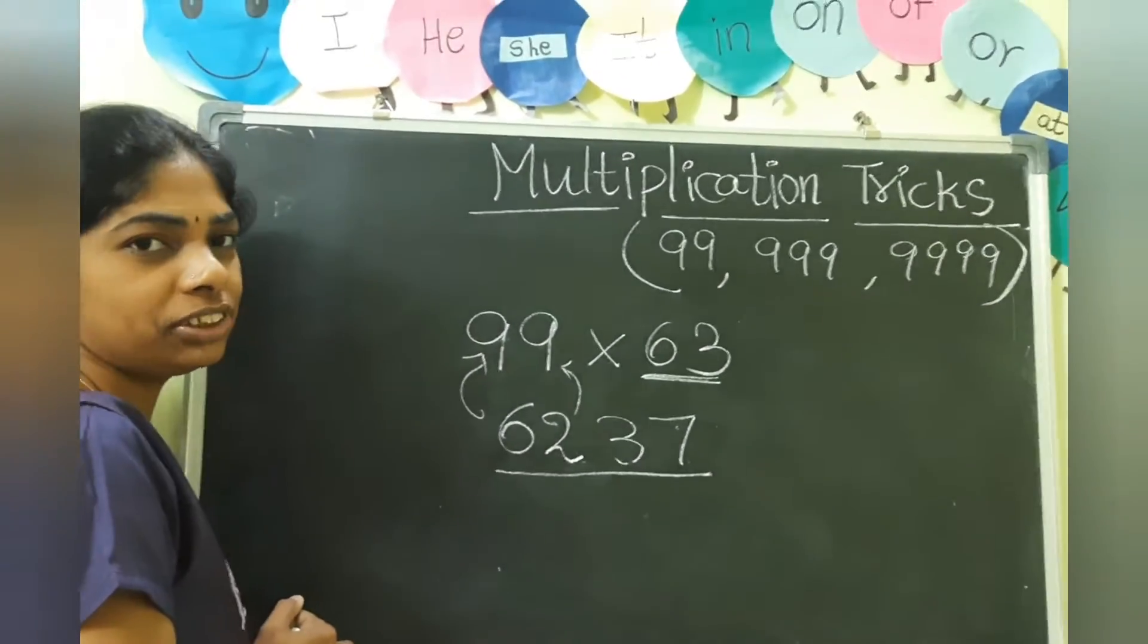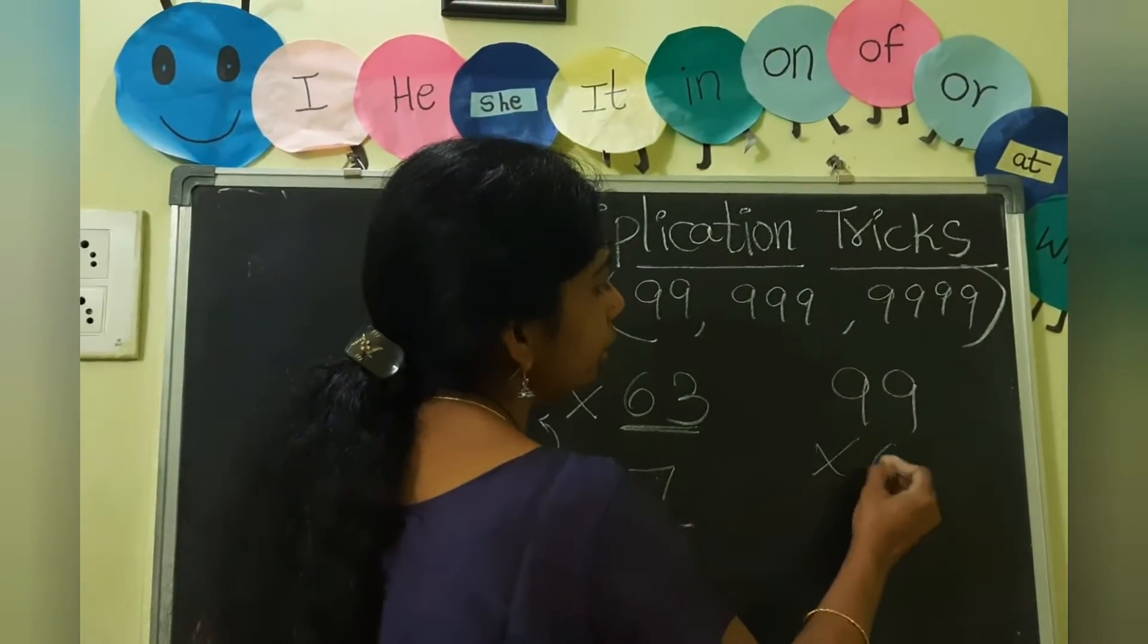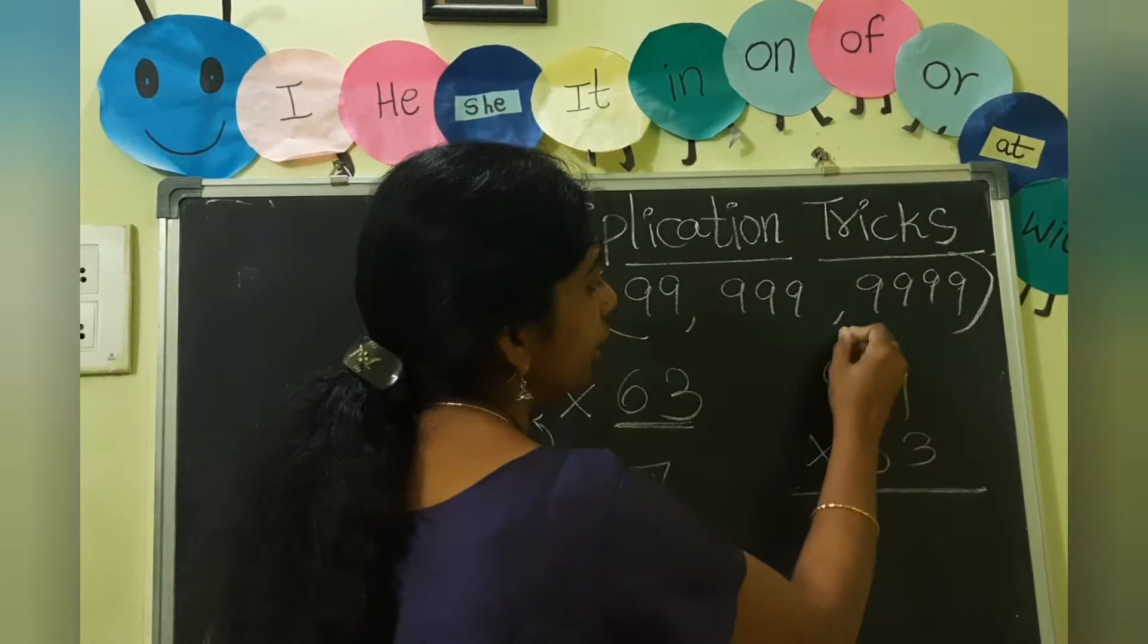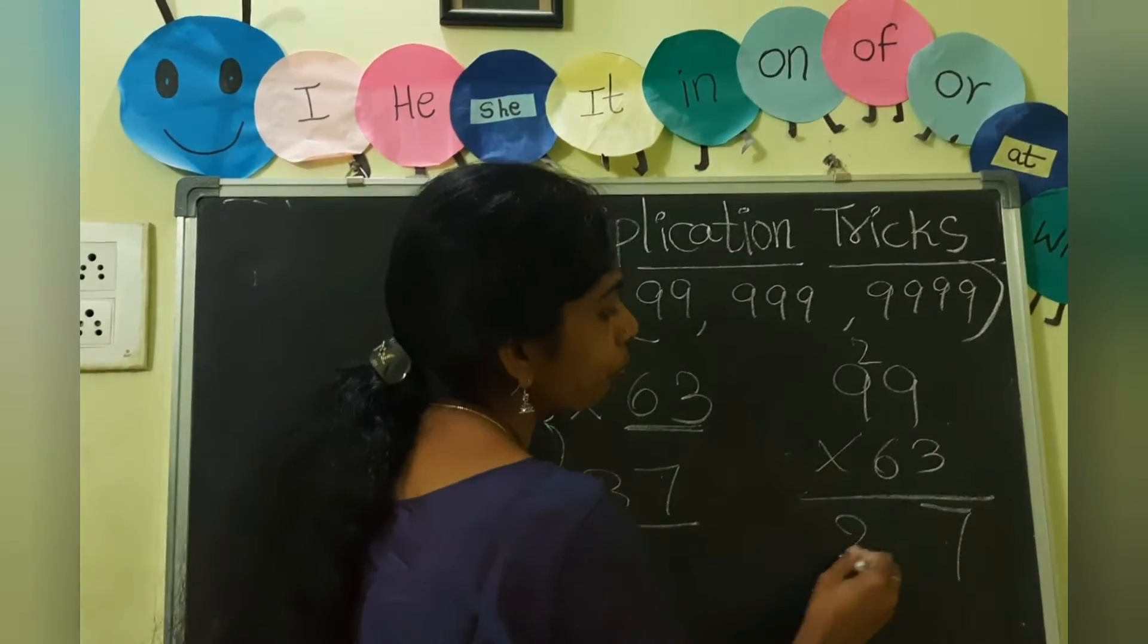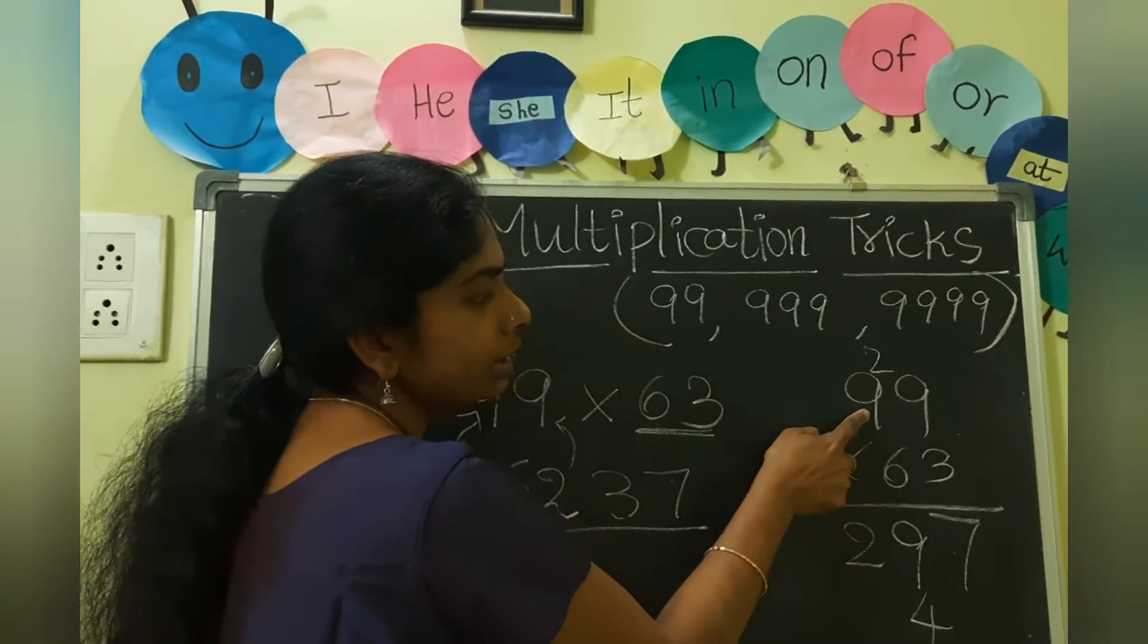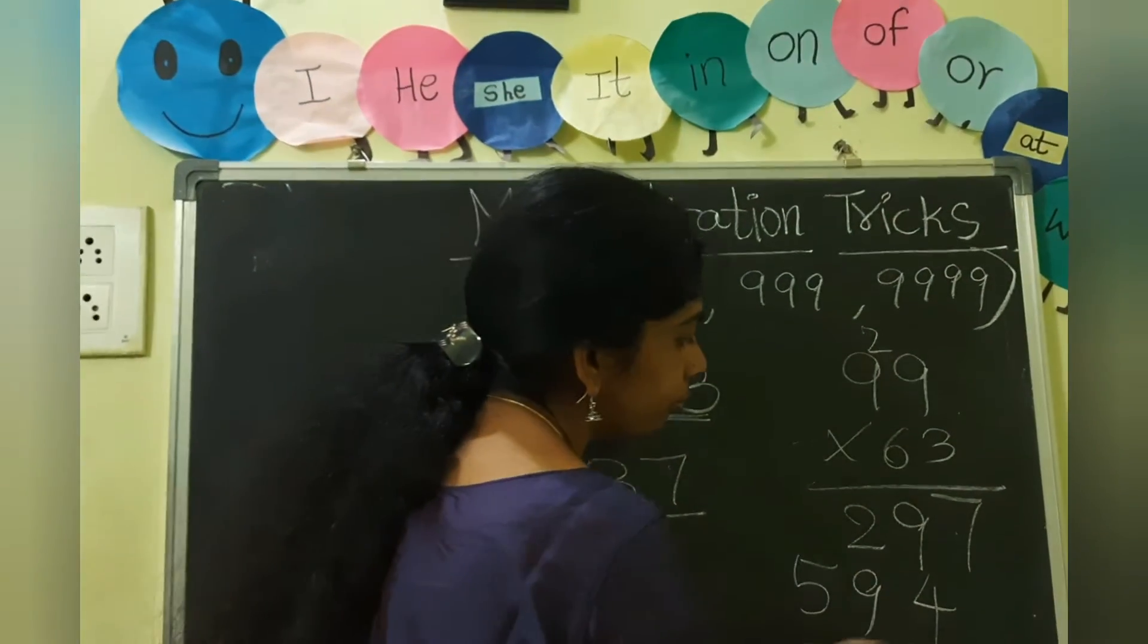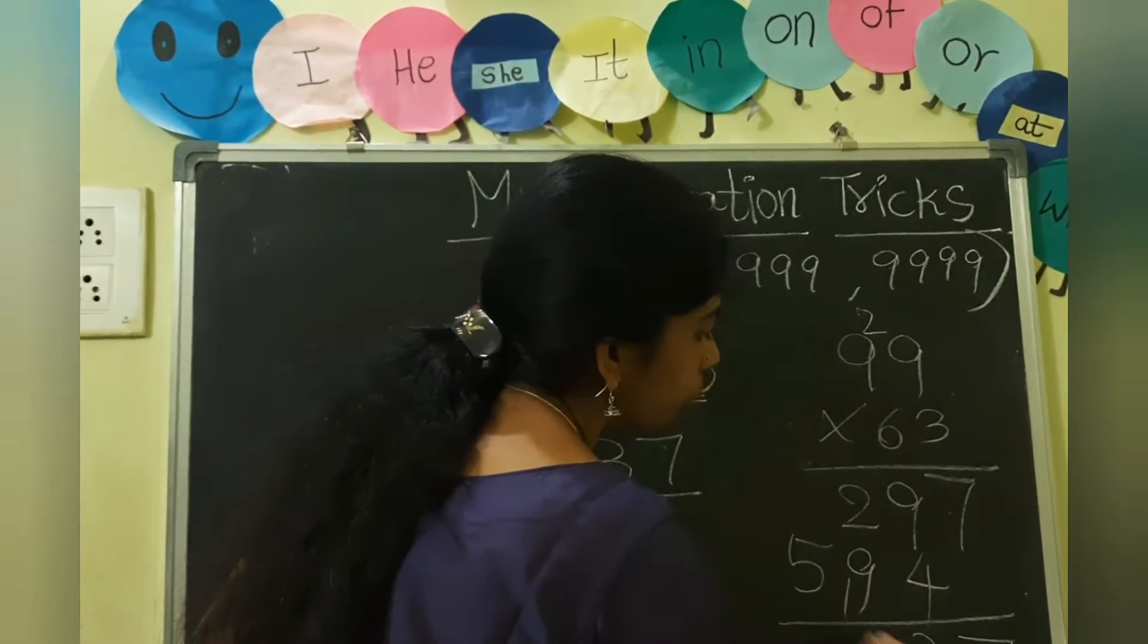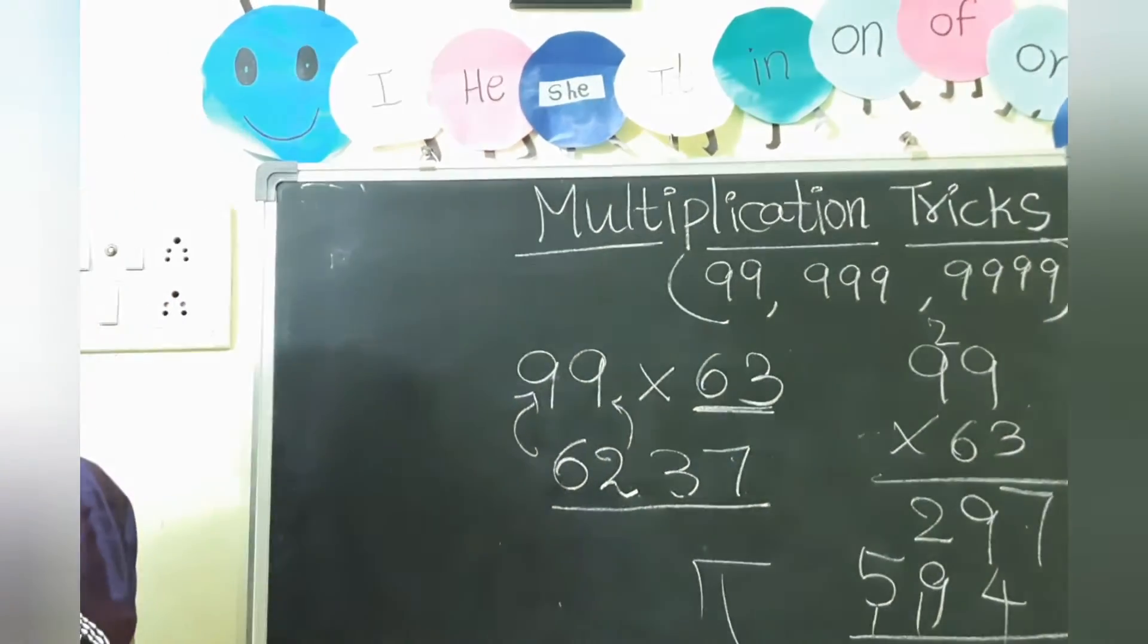Now we will check our answer. 99 into 63. 3 nines are 27. 3 nines are 27 plus 2, 29. 6 nines are 54. 6 nines are 54 plus 5, 59. So 6, 2, 3, 7. Our answer is right.